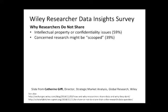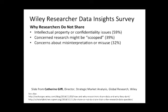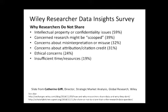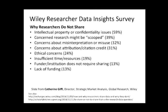Researchers are concerned that their research might be scooped — and it will be. How can we protect researchers who are sharing data from being scooped? Part of it has to be an agreement among the community to behave in a gentlemanly manner with people who are sharing data. They also have concerns about misinterpretation or misuse, about attribution and citation credit because currently there really is none. They have ethical concerns, insufficient time and resources, and funders and institutions don't require sharing. So they don't know where to share or how to share.